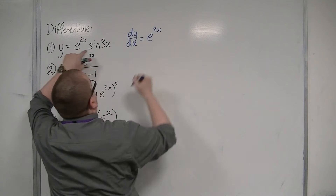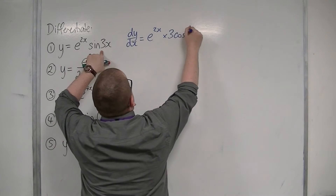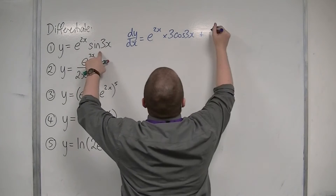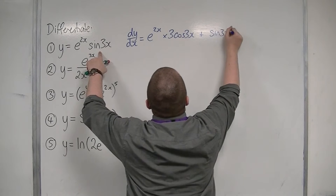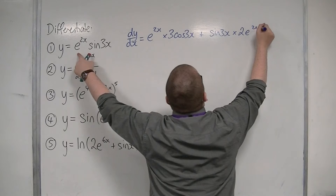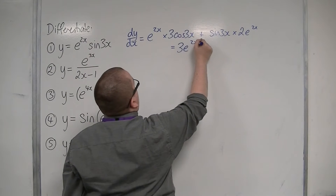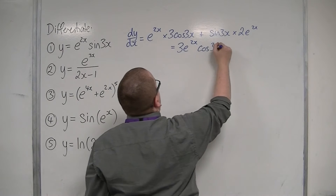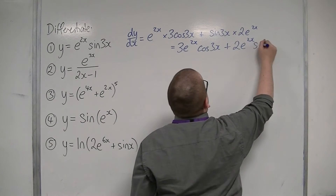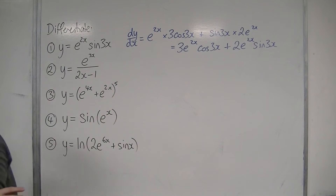So dy/dx is the first, e to the 2x, times by the derivative of the second, which is 3cos(3x), plus the second times the derivative of the first — so sine(3x) times e to the 2x differentiated, giving 2e to the 2x. Simplified: we have 3e^(2x)cos(3x) plus 2e^(2x)sin(3x), and that's the answer to the first one.